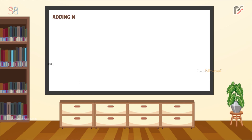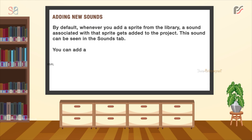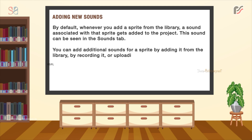Now, adding new sounds. By default, whenever you add a sprite from the library, a sound associated with that sprite gets added to the project. This sound can be seen in the Sounds tab. You can add additional sounds for a sprite by adding it from the library, by recording it, or by uploading a sound file from your computer.